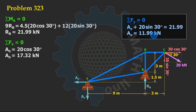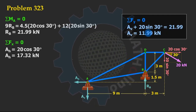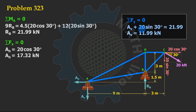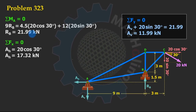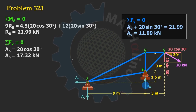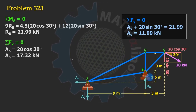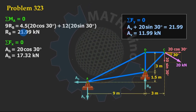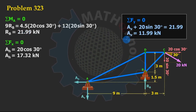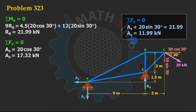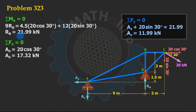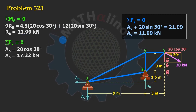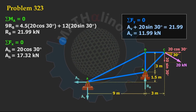This solution is highlighted because it is not recommended. The reason: we used the derived value of RB in finding AV. As much as possible, do not use a derived value in your equation — if your derived value is wrong, your next solution will also be wrong. If we can find AV without using RB, that is a better and safer solution.